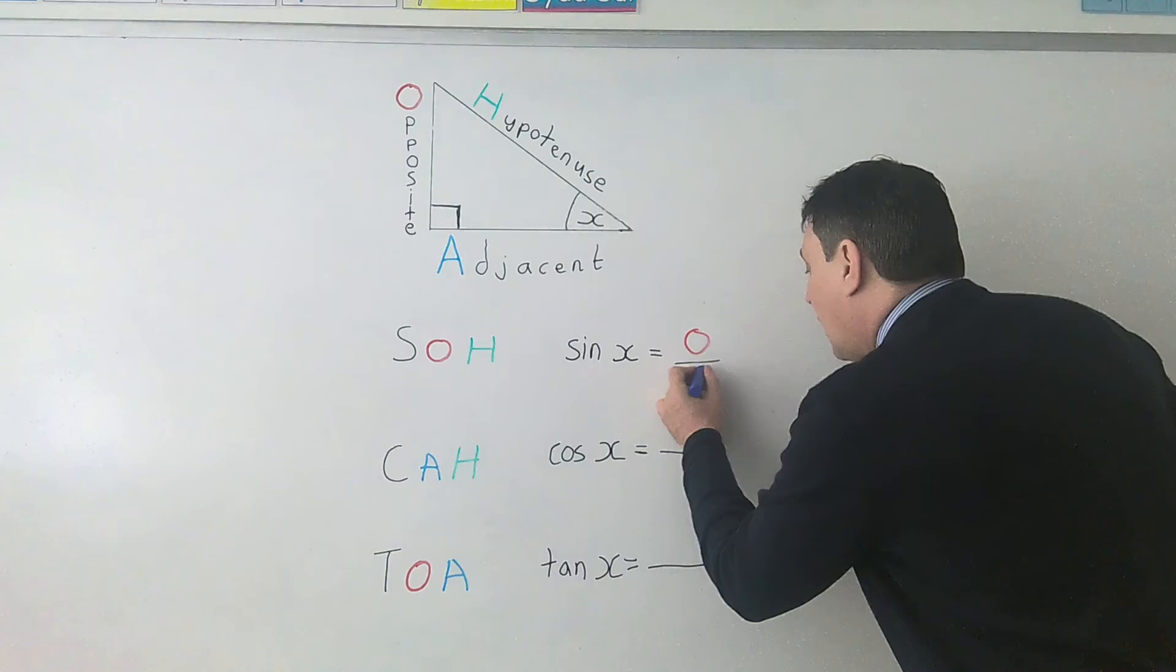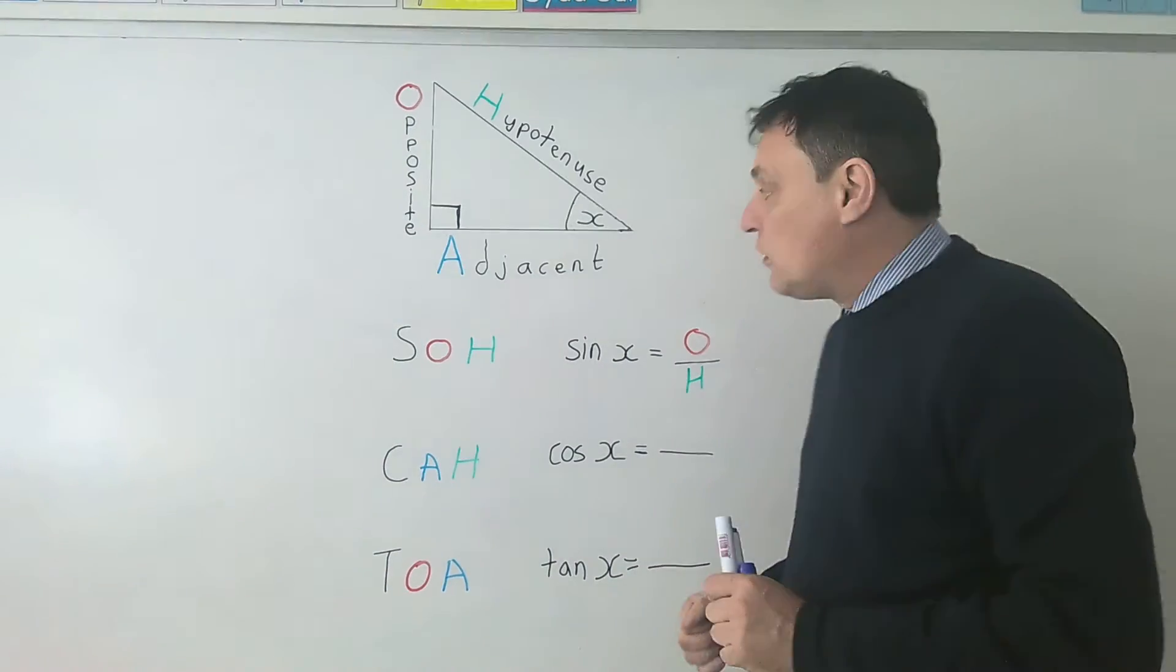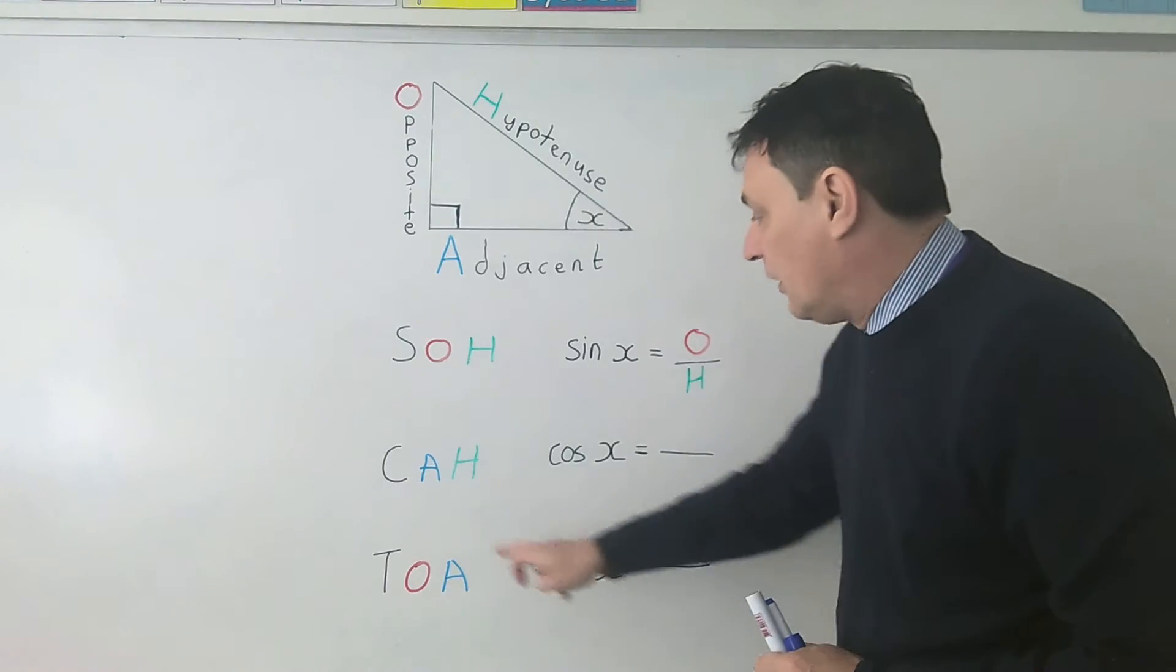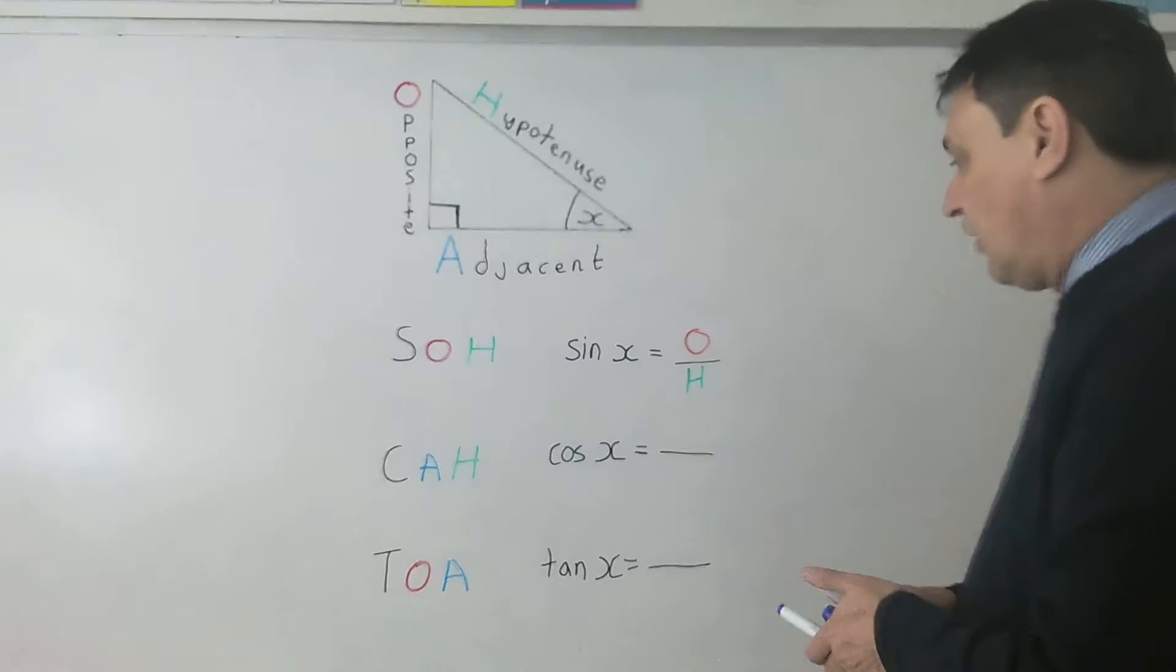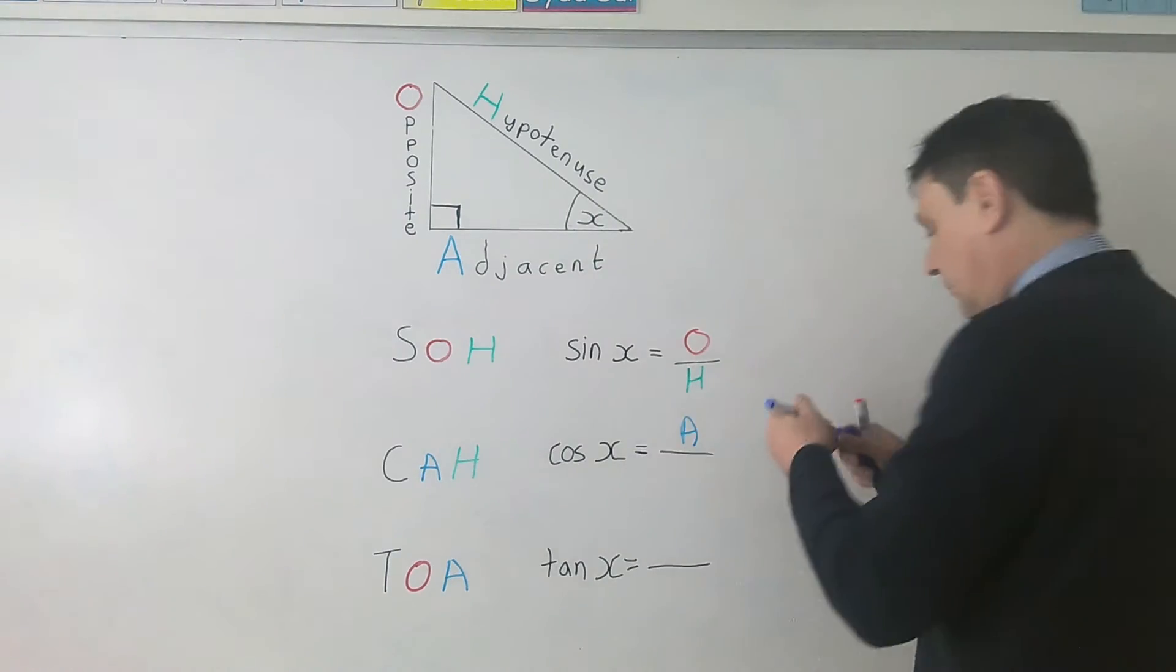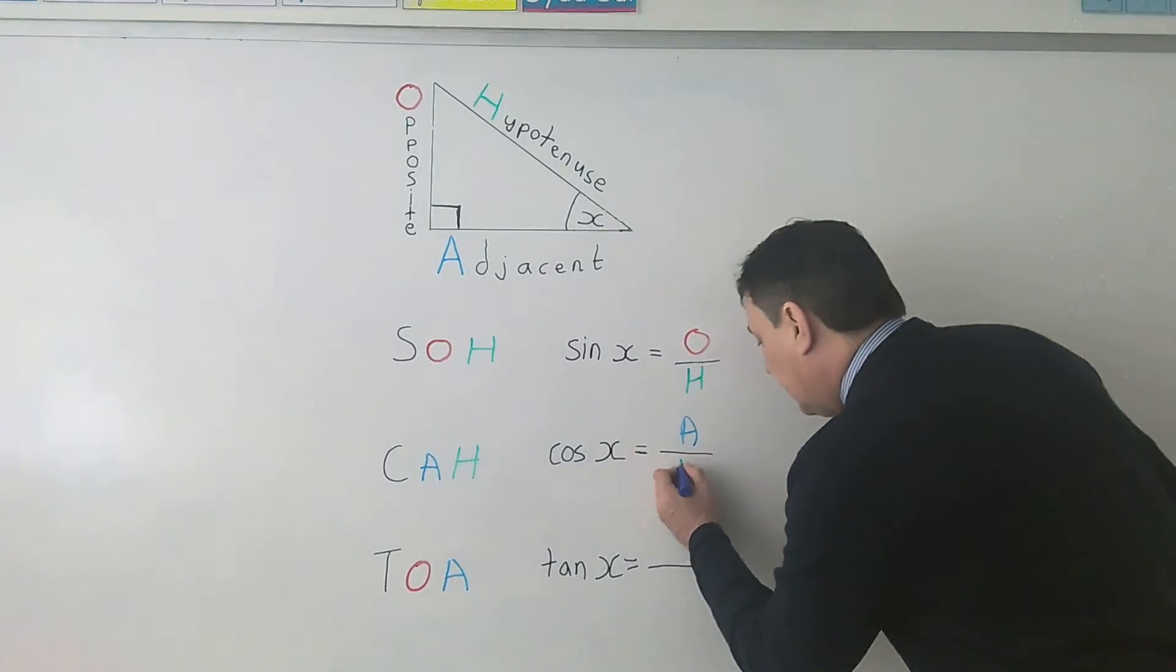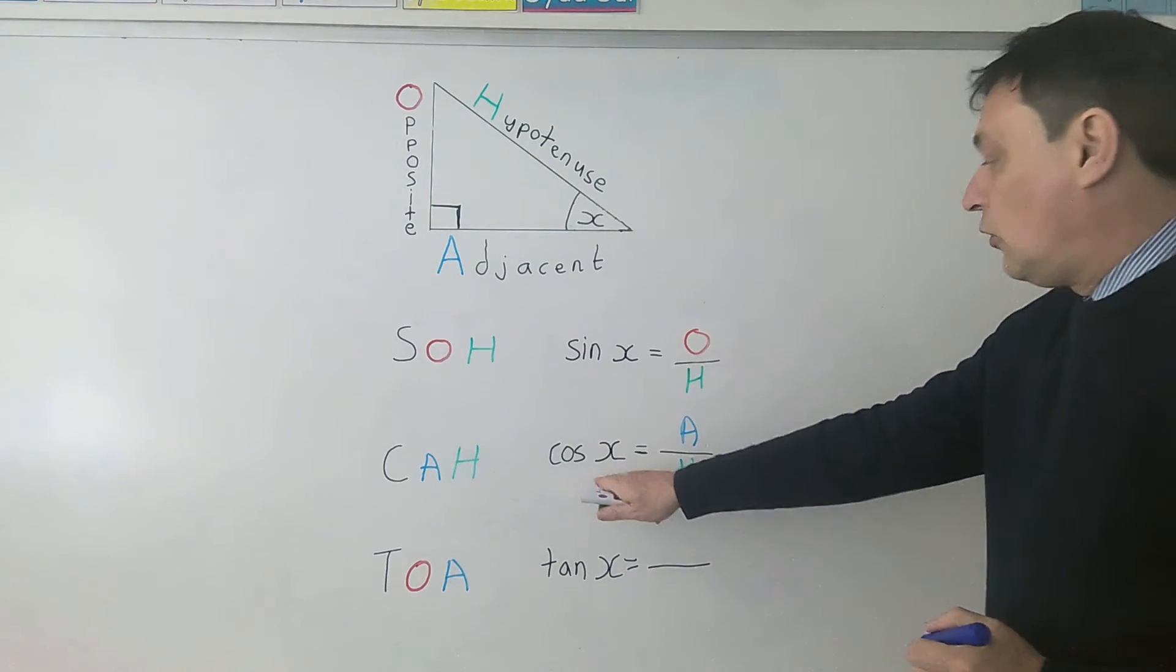And in the same way if you ever needed to use cos to find something, you'd get the adjacent sides, so that's CAH, so that's adjacent and that's also over the hypotenuse, so cos is adjacent or cos of x will be adjacent over hypotenuse.